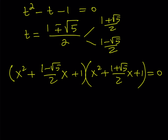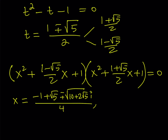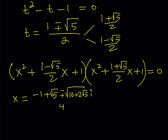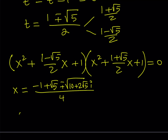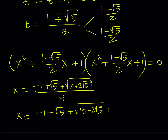That's the factored form of the original equation. We have two quadratics which we can solve using the quadratic formula to get four solutions. The first quadratic gives x equals negative one plus root five, plus or minus the square root of ten plus two root five, times i, all divided by four. The second gives x equals negative one minus root five, plus or minus the square root of ten minus two root five, times i, over four.